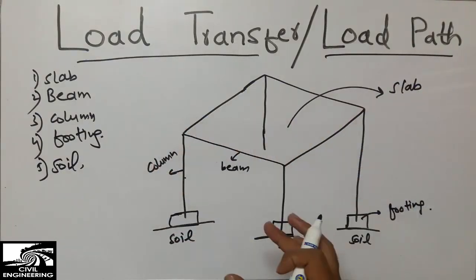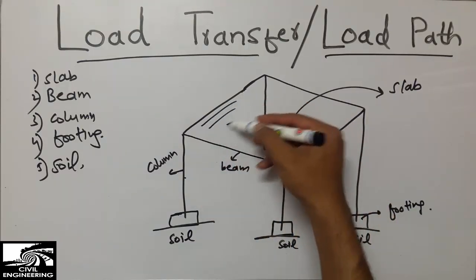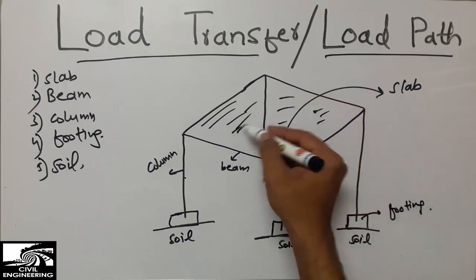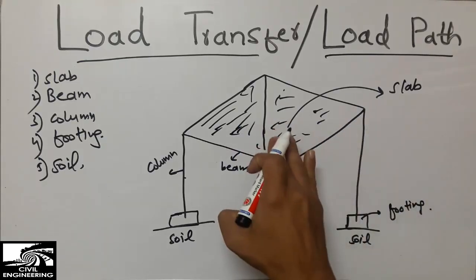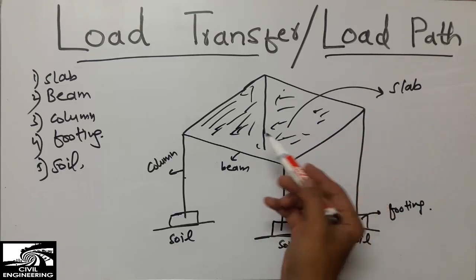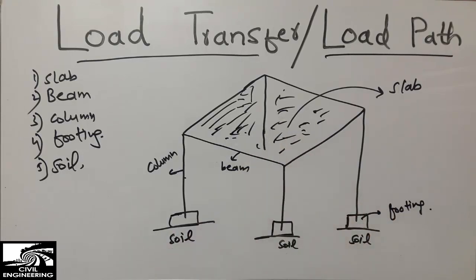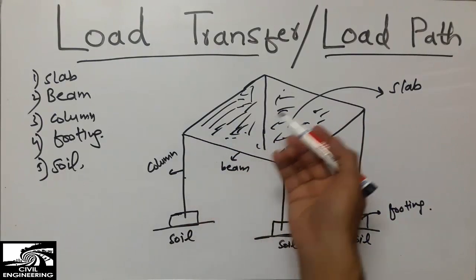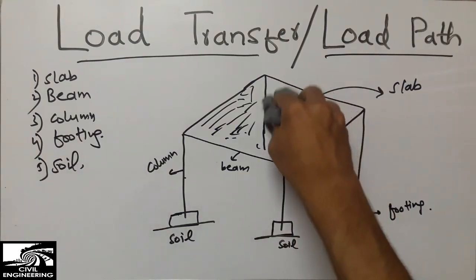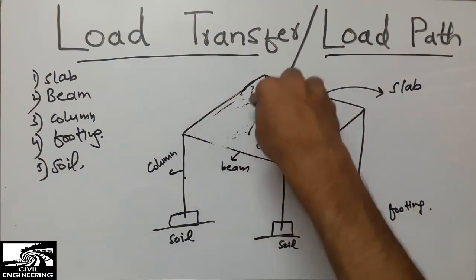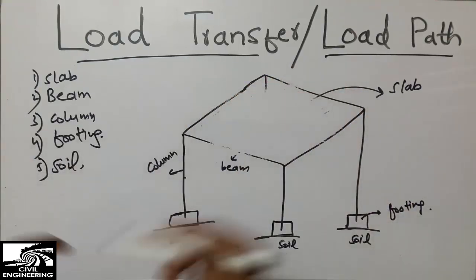Now let's look at how the load transfers from one member to another. Taking an example: this is the slab on which we move in our daily life. There is a slab, and people or machines are placed on this slab, creating a load. So what does the slab do? Will it transfer the load directly to the column, or directly to the footing? I'll show by diagram how the slab transfers the load to its lower part.